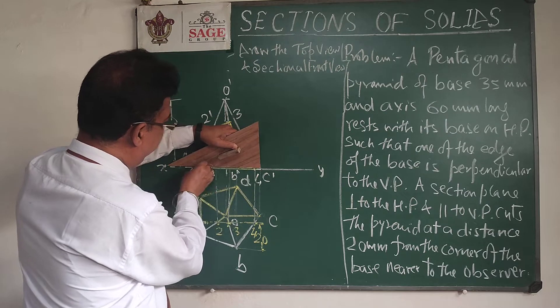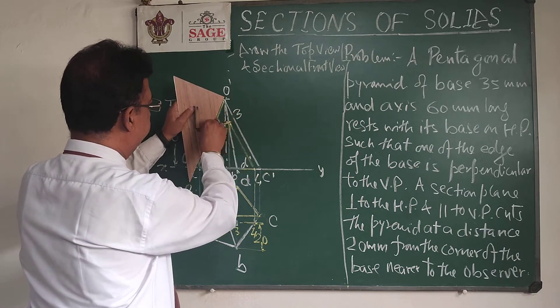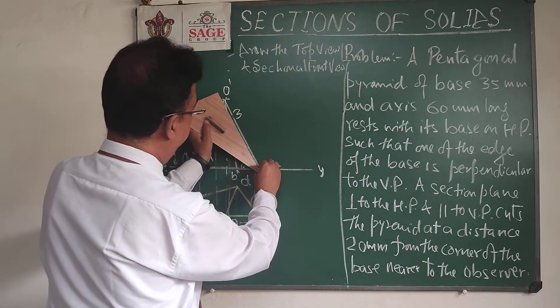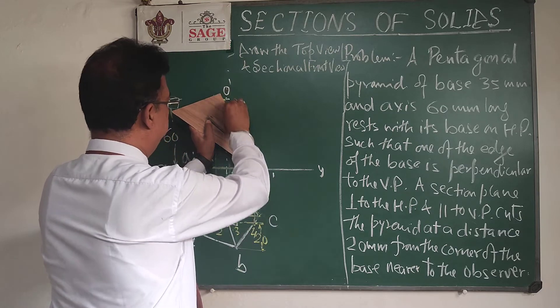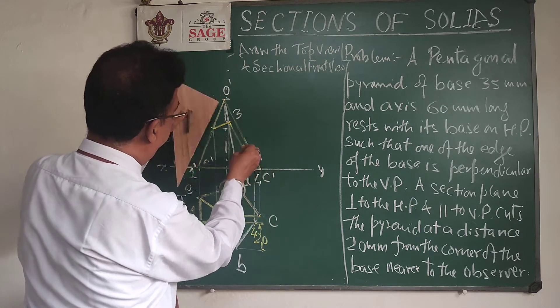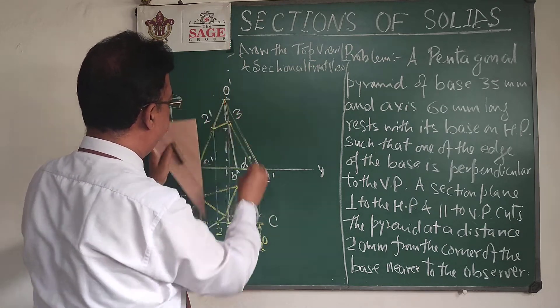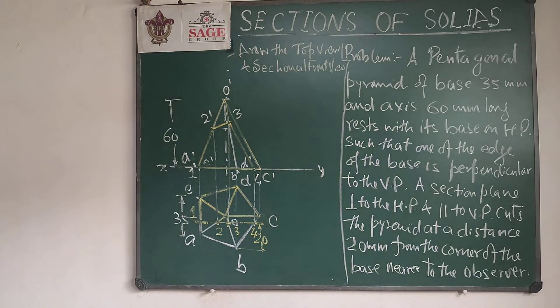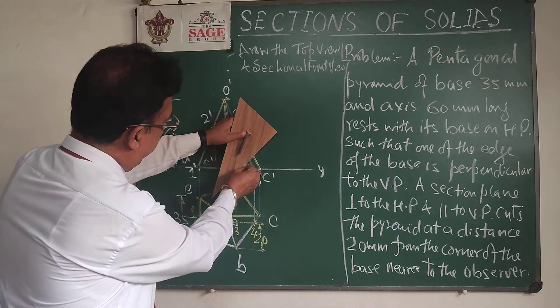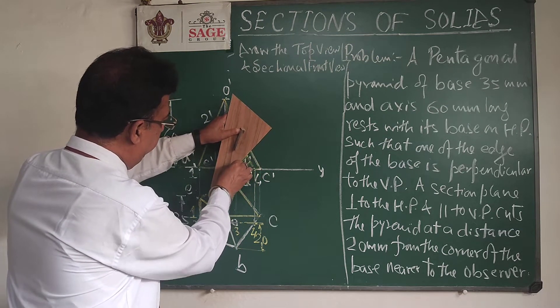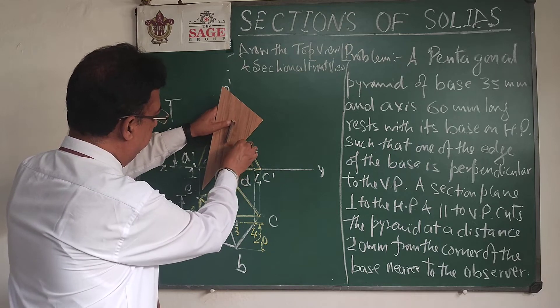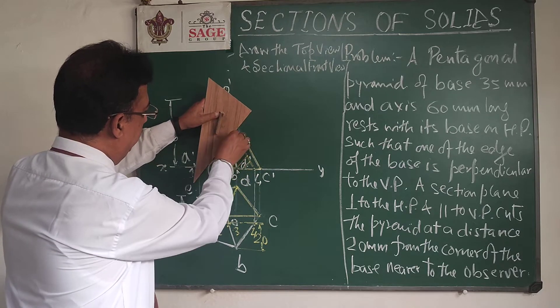This is the required section. Upper part is also available, so I will darken that part also. And then section lines at 45 degree incline to the XY, like this.